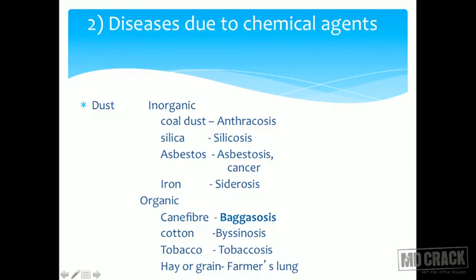Dust can be inorganic or organic. Organic dust — which comes from living things and contains carbon — is relatively well tolerated, because organic matter can be decomposed and taken away from the site of deposition. Inorganic dust, however, cannot be processed this way. If you inhale asbestos, the body has no pathway to digest or remove it. Therefore inorganic dust is generally more harmful, while something can be done about organic dust.